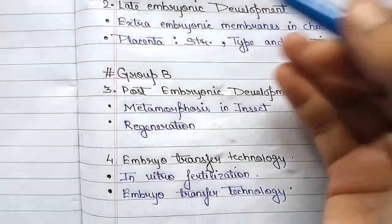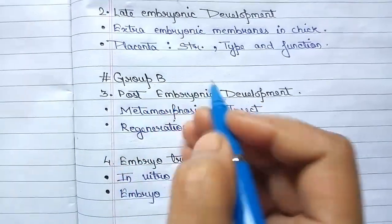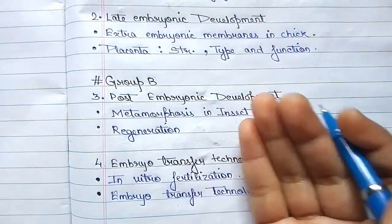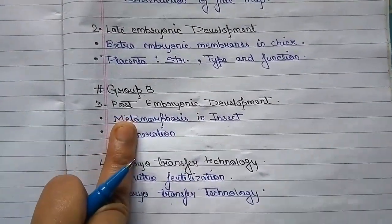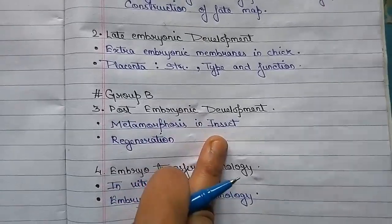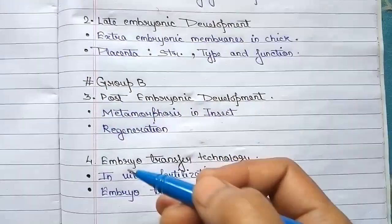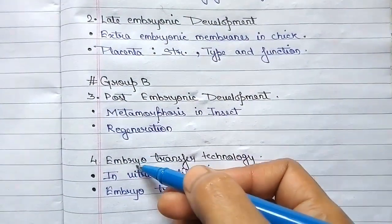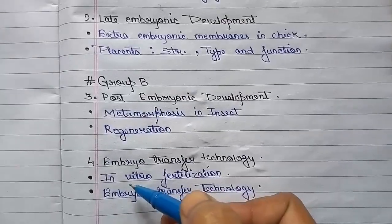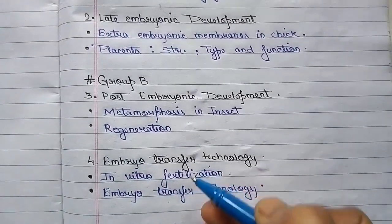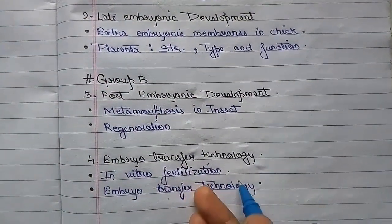Now coming to group B, which is post-embryonic development. First is metamorphosis in insect and regeneration. And then embryo transfer technology, which includes in vitro fertilization and embryo transfer technology.